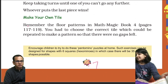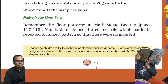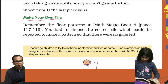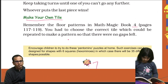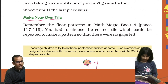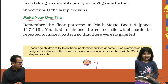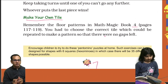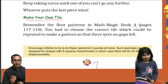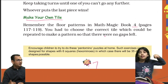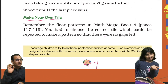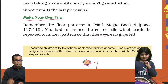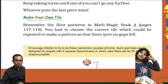I hope you all understood this game. Now the next part is 'Make Your Own Tile'. Remember that in the floor patterns in Math Magic Book 4, pages 117 to 119, you had to choose a tile which could be repeatedly placed to make a pattern with no gaps left. That's all for this video — we covered page number 47. If you liked this video, don't forget to like, share, subscribe, press the bell icon, and comment. See you in the next video where we come back with page number 48.